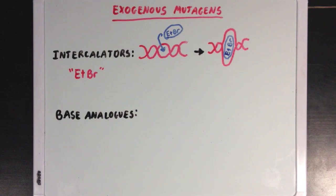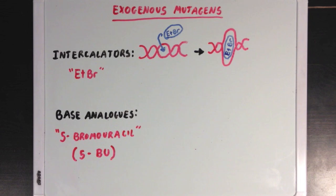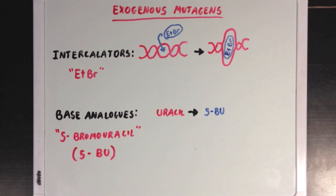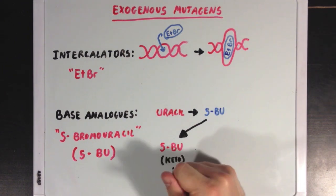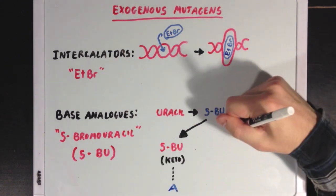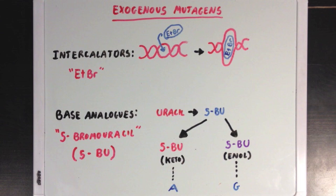Base analogues, like 5-bromouracil — also called 5-BU — pretend to be a certain base but then act differently than that base normally would. 5-BU is an analog of uracil and looks a lot like it, but once incorporated into DNA, it can shift between two different forms. In its keto form it pairs best with adenine, while in its enol form it pairs best with guanine. 5-BU can convert between these forms through a tautomerization reaction, and you can see how this base analog can induce mutations in a DNA strand.